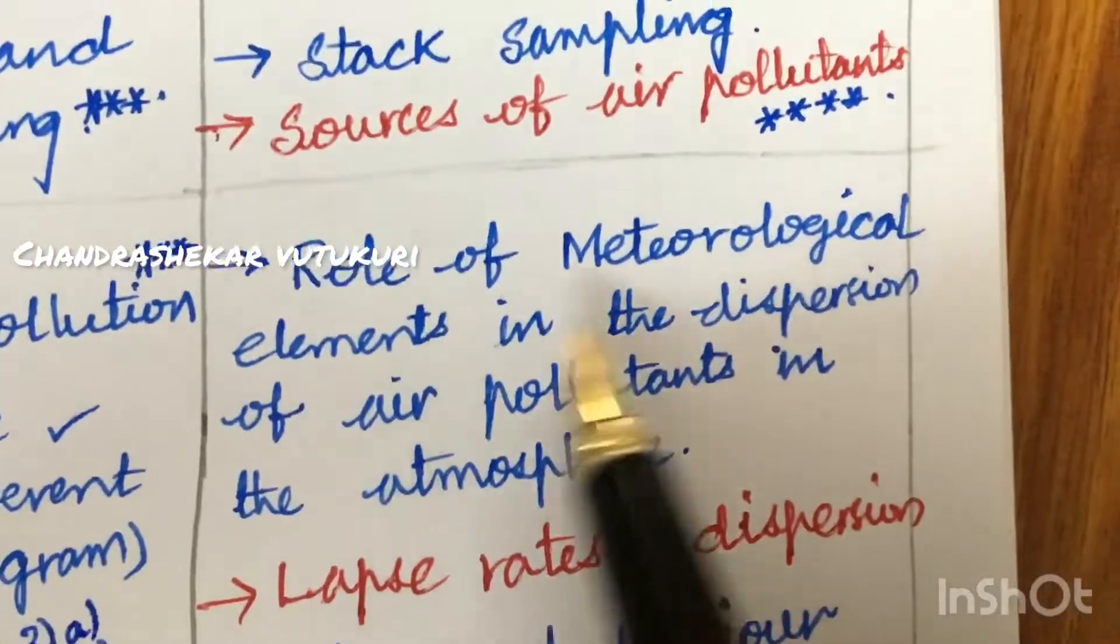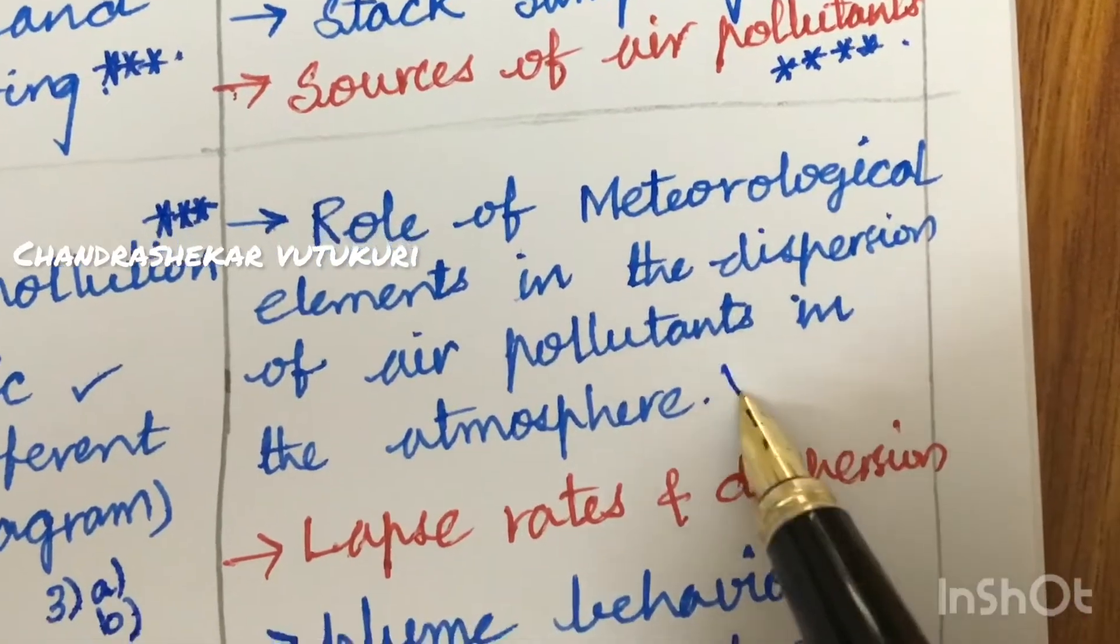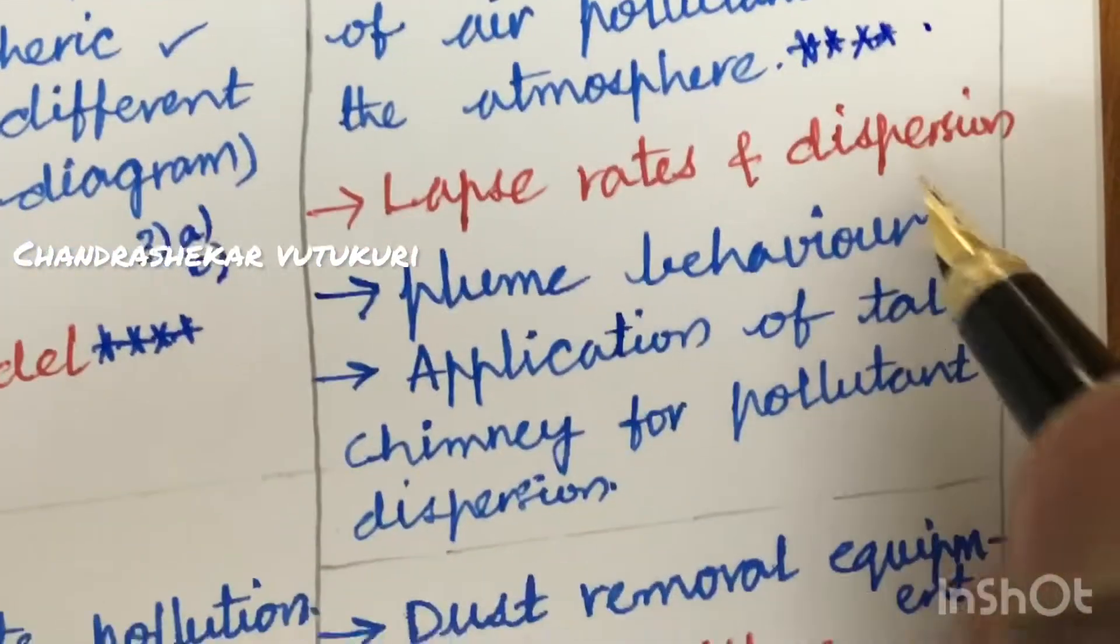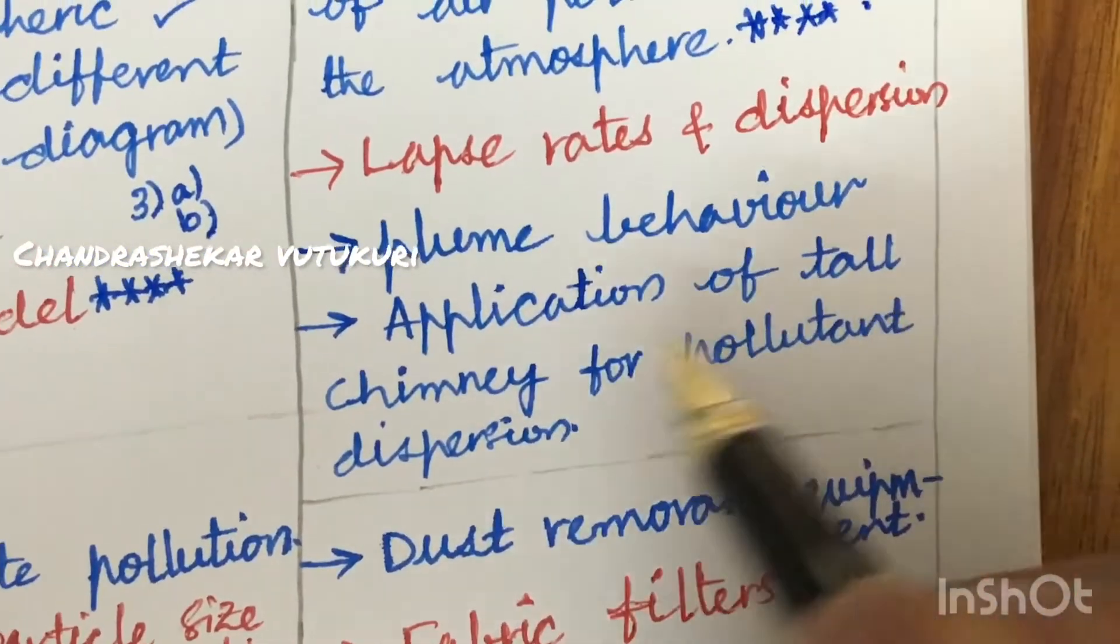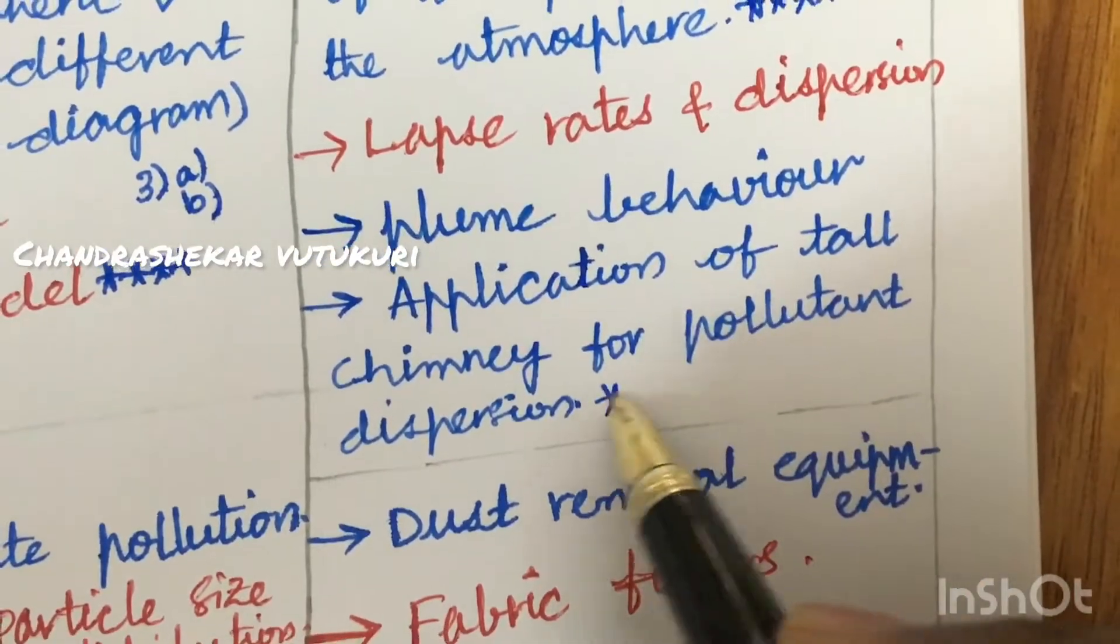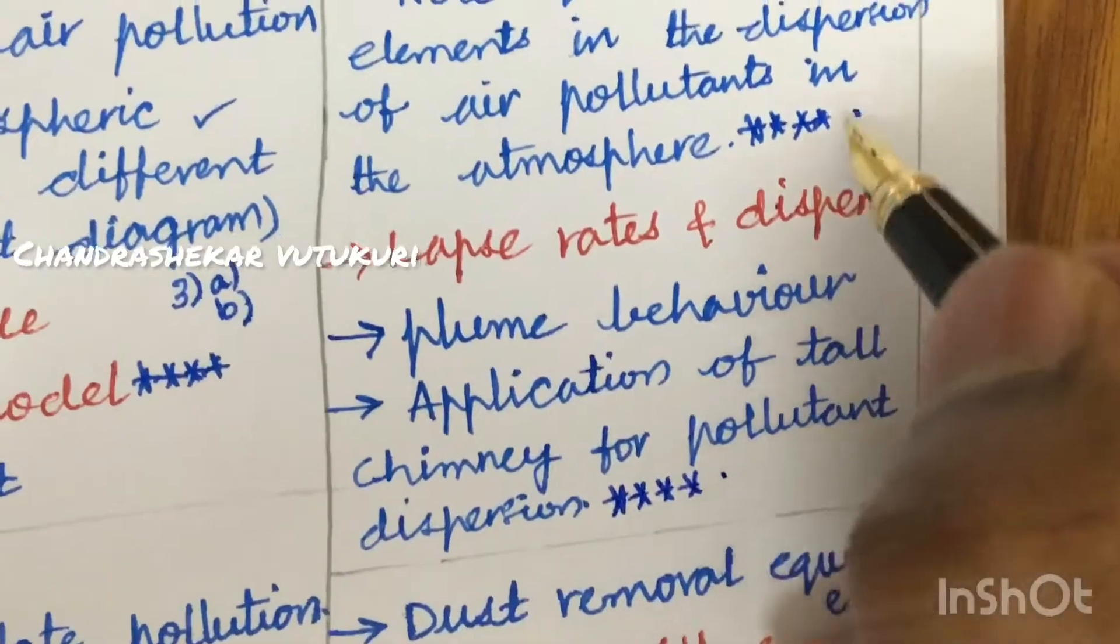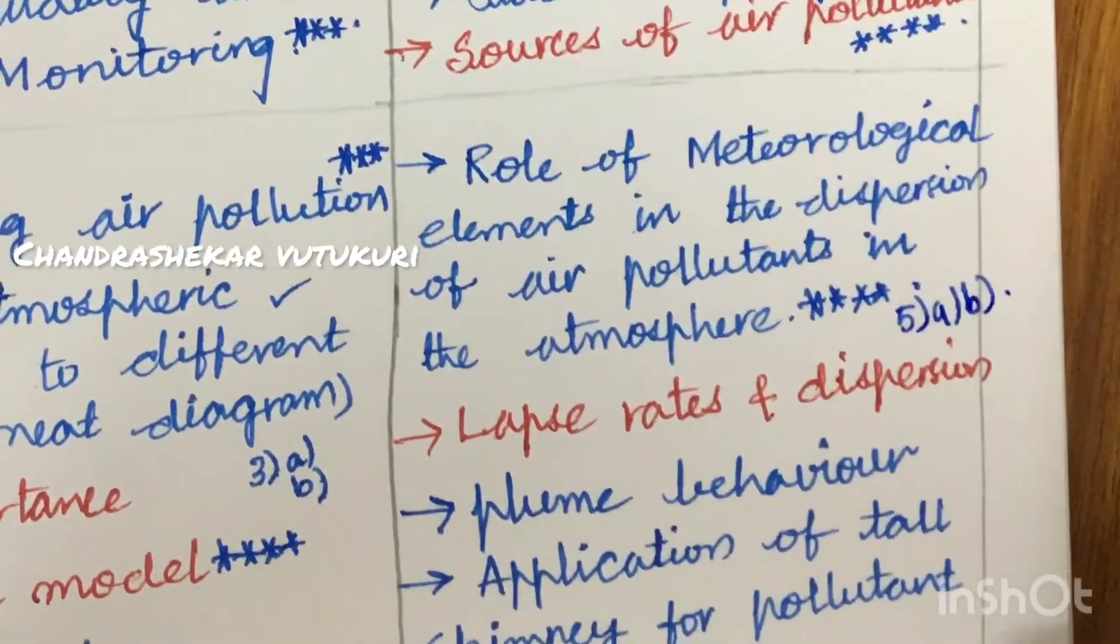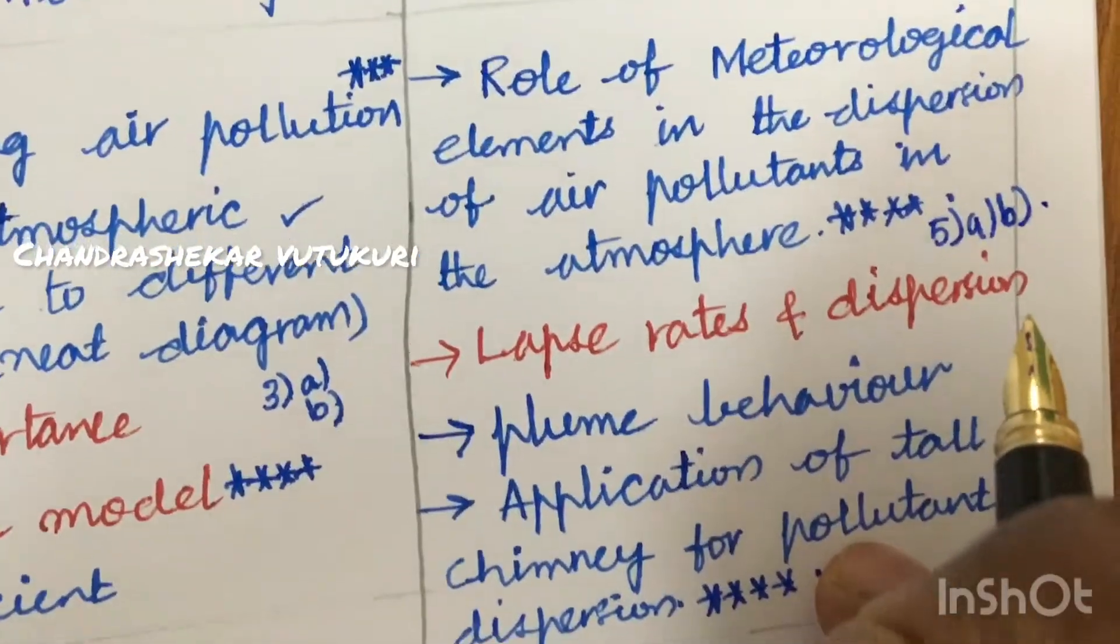Later, the role of meteorological elements in the dispersion of air pollutants in the atmosphere is said to be the 4A question in the question paper. And the lapse rates and the dispersion and the plume behavior and the application of tall chimney for the pollutant dispersion is said to be a very important and gunshot question for this time in the question paper. And from this part, we can expect 5A as well as 5B, dear students. Sometimes if it is asked, this will be asked directly for 15 marks also.